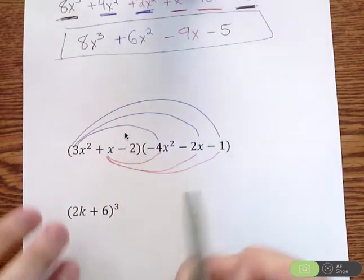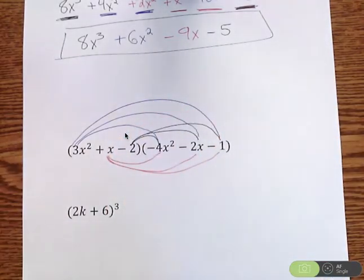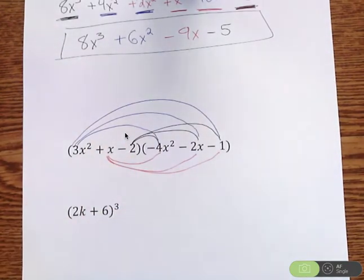Then you take your third term in the front parentheses and multiply it to the first, to the second, and to the third. Once you do all that multiplying out, you combine like terms.